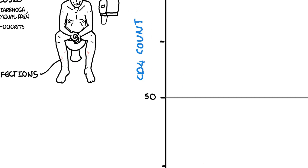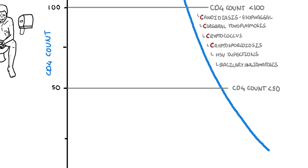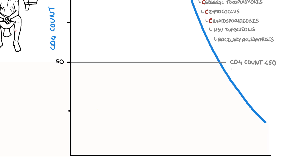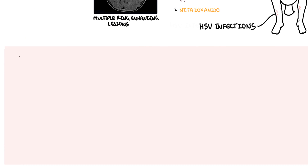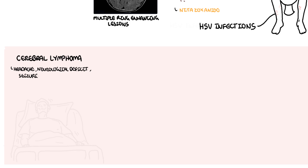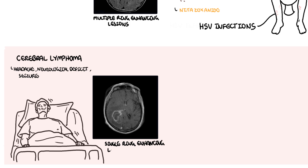Finally, AIDS defining conditions that occur when the CD4 cell count is less than 50 include three main conditions: CNS lymphoma, CMV infection, and mycobacterium avium complex infection, or MAC. CNS lymphoma presents with headache, neurological deficits, or seizures. MRI shows a single enhancing lesion with possible mass effect, as opposed to toxoplasmosis which has multiple enhancing lesions. A biopsy is important to differentiate between the two. Treatment involves surgery and/or chemotherapy, although prognosis is very poor.